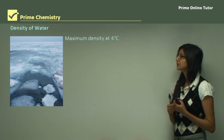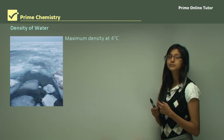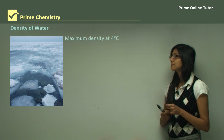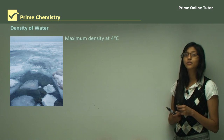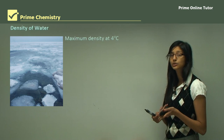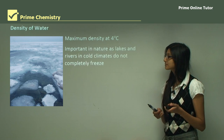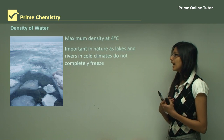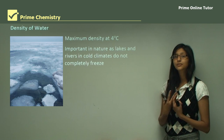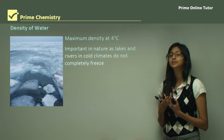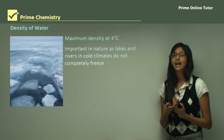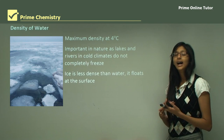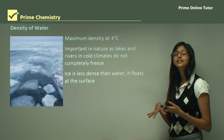The maximum density of water is at 4 degrees Celsius, with a value of 1 gram per centimeter cubed. This is very important in nature, as lakes and rivers in cold climates do not completely freeze. That is because ice is less dense than water.